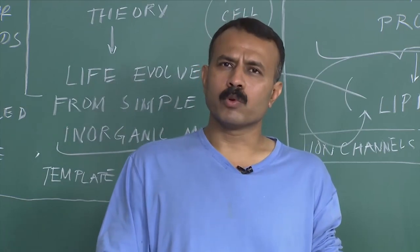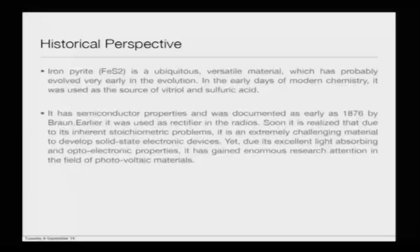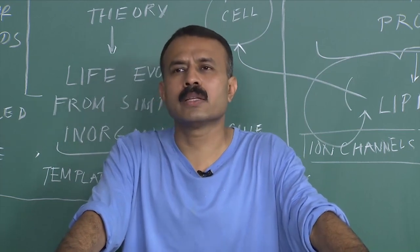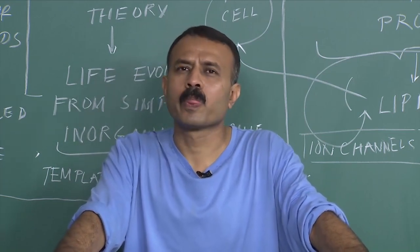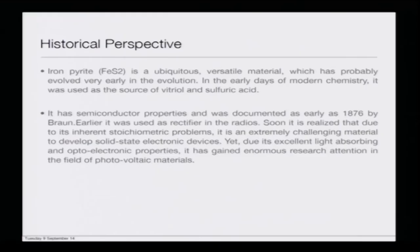After that it was Bose who worked on galena crystals and so forth. It was known as early as eighteen seventy-six — if you look at Brown — that it has semiconductor properties, documented very early in the development of semiconductors, much before crystalline silicon was even on the scene. It was used in rectifier circuits in radios.